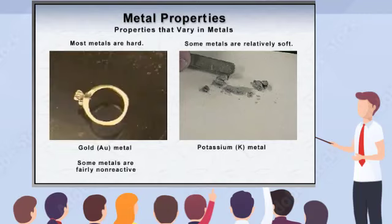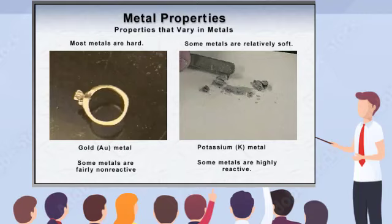Some metals, such as platinum and gold, are fairly non-reactive. Therefore, they won't rust or tarnish as easily as other metals. This property, along with their rarity and beauty, make them valuable as jewelry. Other metals are so reactive that they will react with oxygen or moisture in the air, or even on your skin.